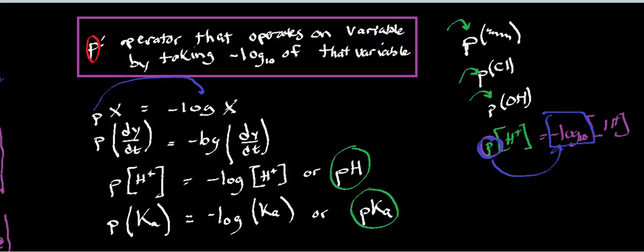pH, or p of the concentration of H, is negative log of the concentration of H, where sometimes they just write it as pH. p of Ka is the negative log of Ka, or pKa.